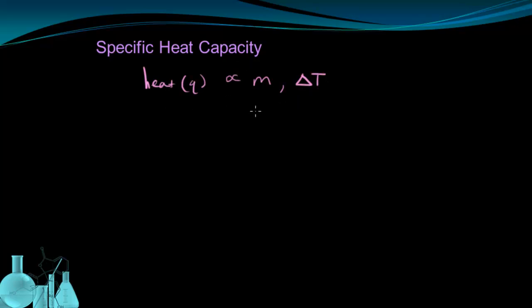And there's actually an equation that relates these together. And that equation looks like this. Q equals M times C times delta T. And some of these terms we've already identified.